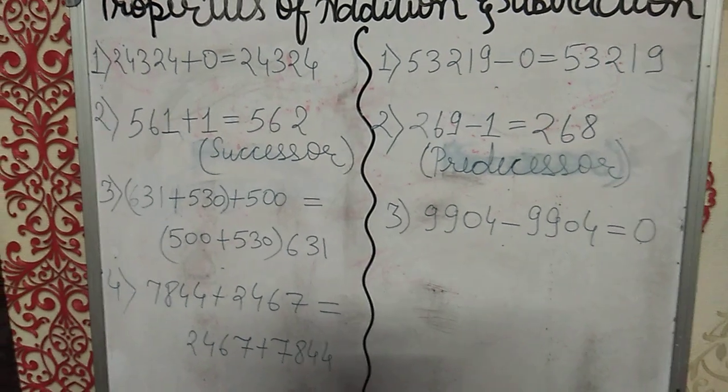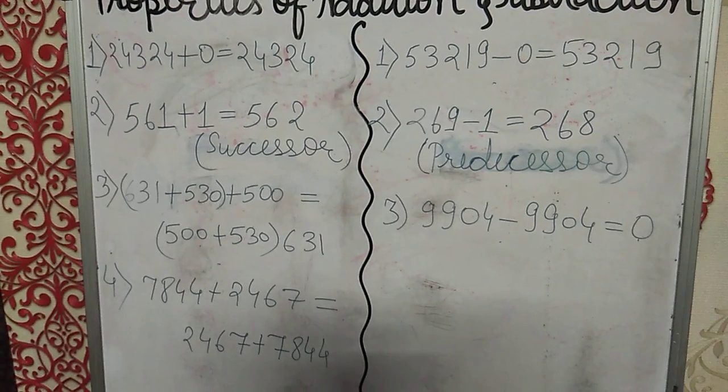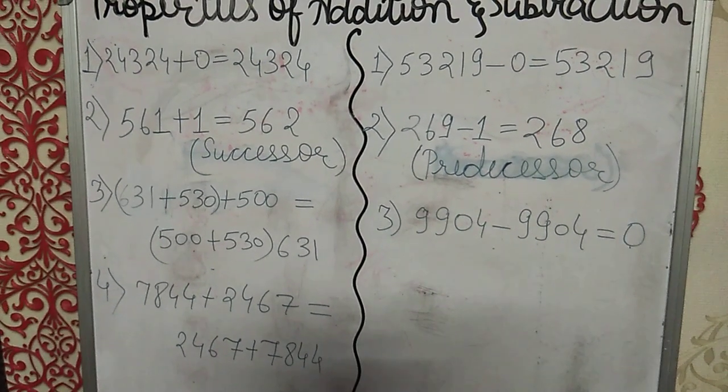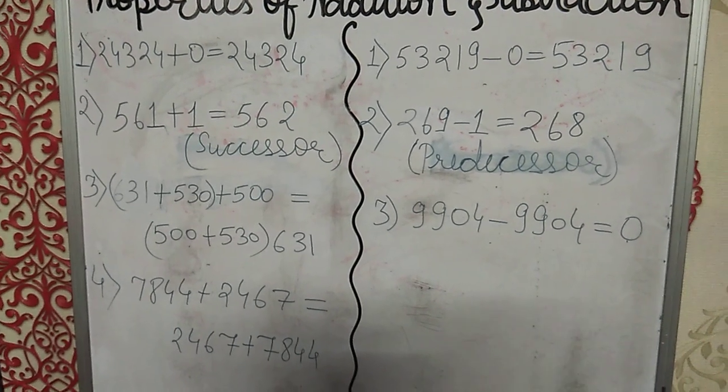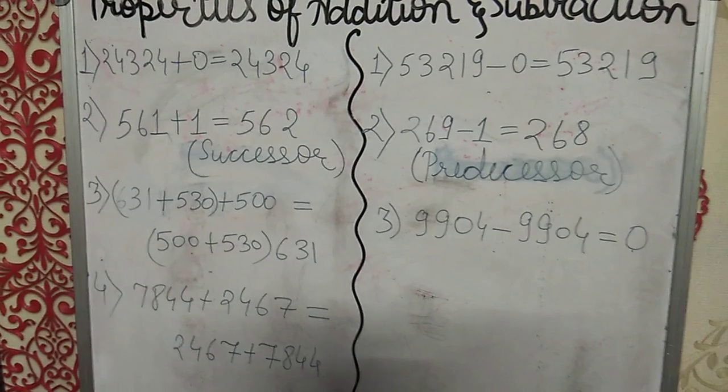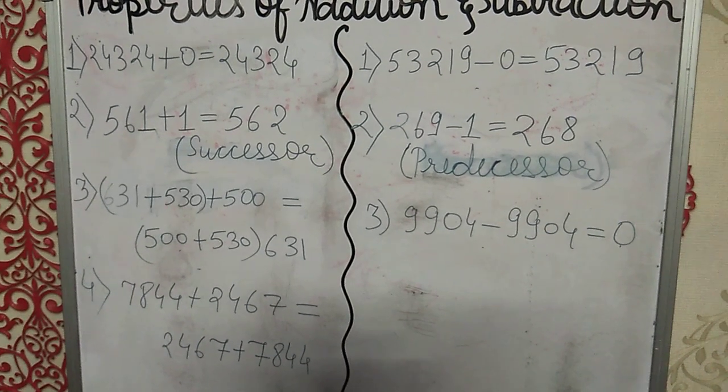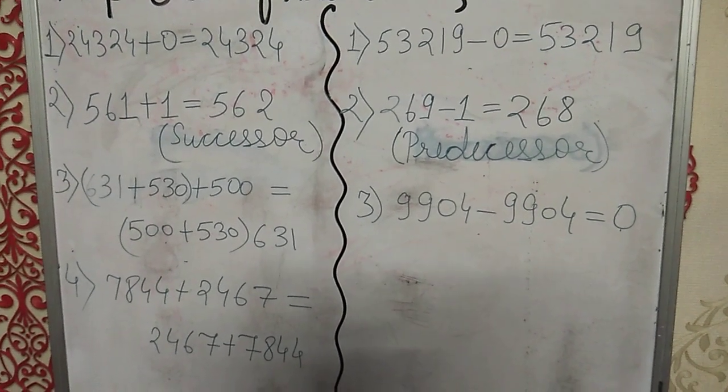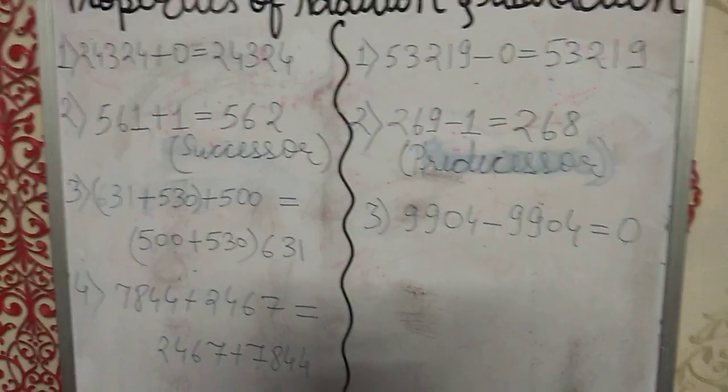Now second property of addition: 561 plus 1 is equal to 562. These are random numbers I have taken. So if you add 1 to any number, then we will get its successor. What is successor? The number next after the number.